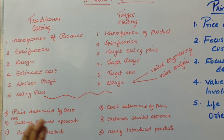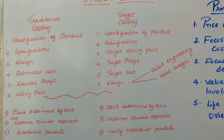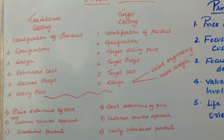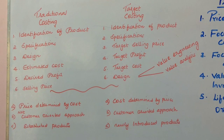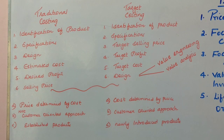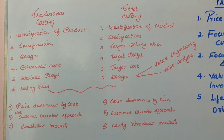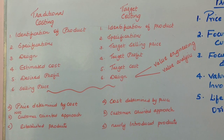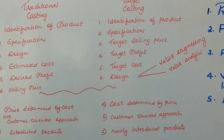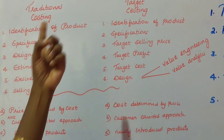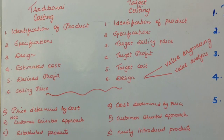Now we have the target selling price as well as the target profit. When we deduct the target profit from the selling price, the result is known as the target cost. This target cost is sent to the design team, and the design team is asked to produce a product within that cost. This concept is termed as target costing.